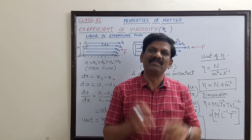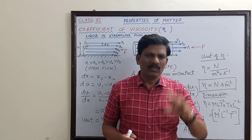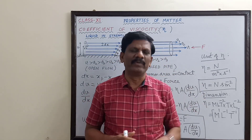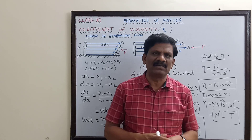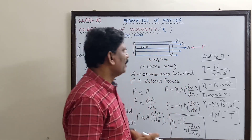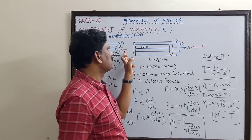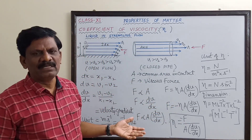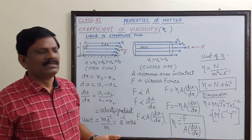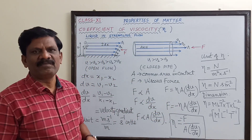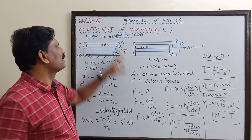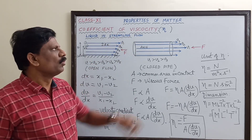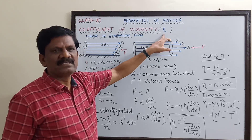Dense liquids like honey, castor oil, and glycerin have greater viscosity, while alcohol and water — lighter liquids with less density — have less viscosity. The opposing force is called viscous force, and the property is called viscosity, expressed by the coefficient of viscosity.